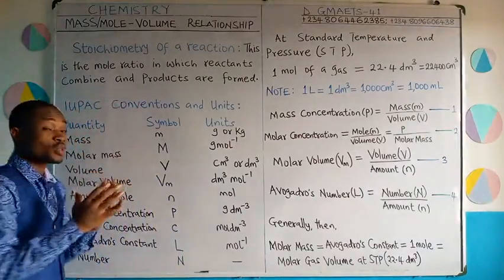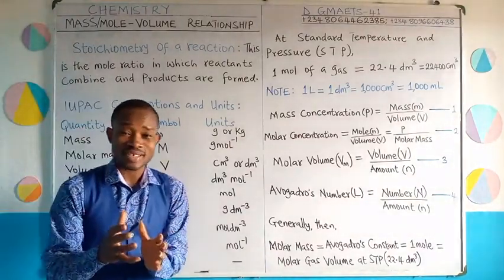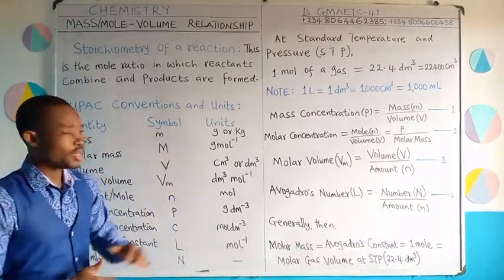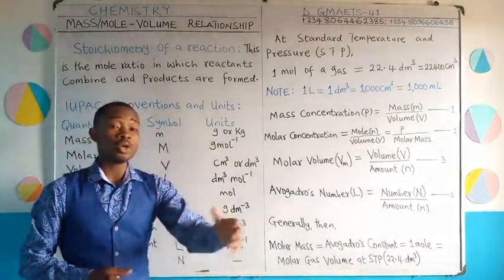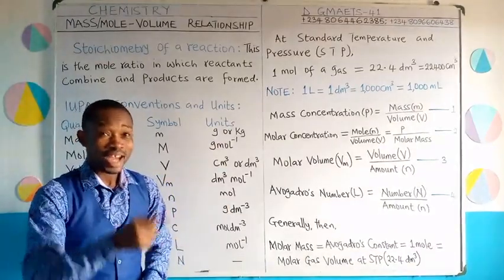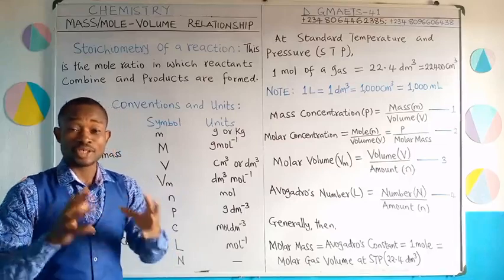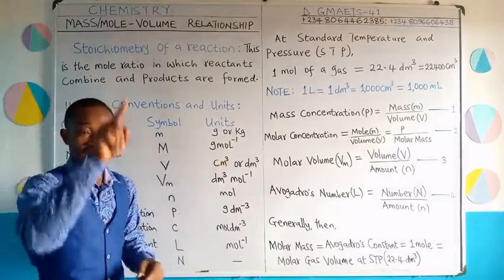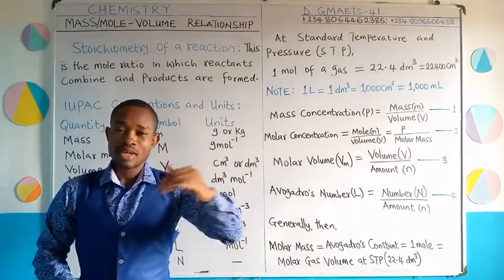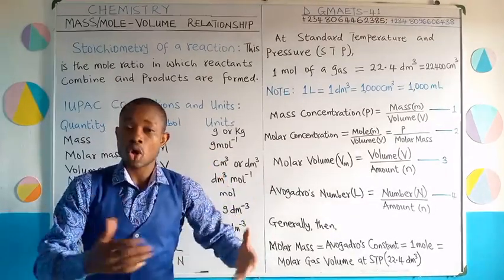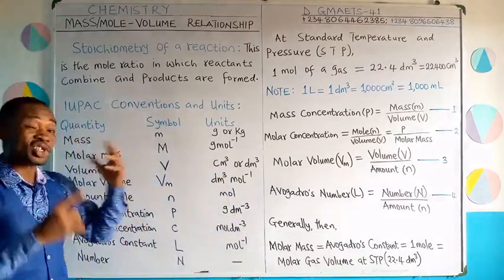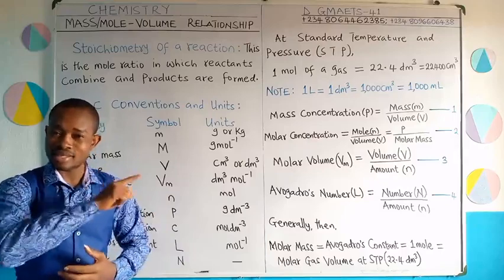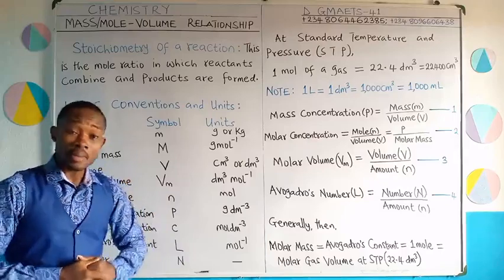Now we look at molar mass — we have treated this also in previous classes. The symbol is capital M and the unit is grams per mole. The word 'per' means division in mathematics, so grams per mole means gram divided by mole. Gram is the unit of mass and mole is the unit of amount. So molar mass, as learned from previous classes, has the formula: mass divided by the number of moles.